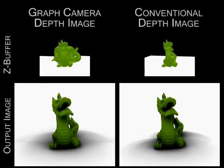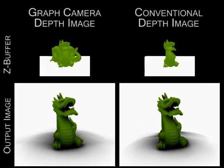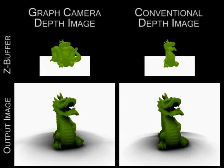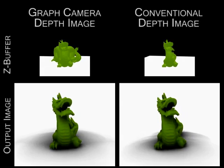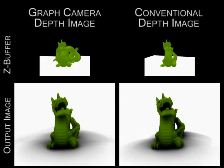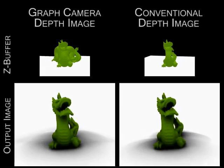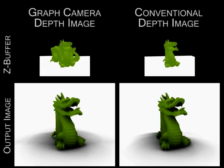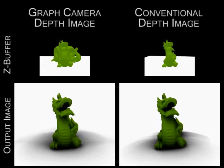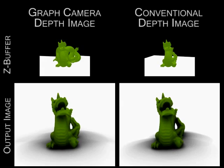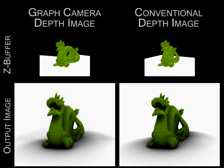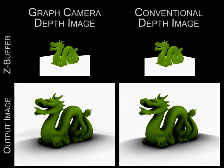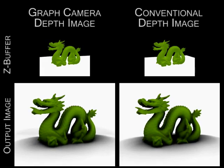We propose to use a non-pinhole z-buffer that captures most samples needed for the ambient occlusion of the output image pixels. Here a graph camera z-buffer alleviates the unstable ambient occlusion artifact. The z-buffers are visualized with color for illustration purposes.